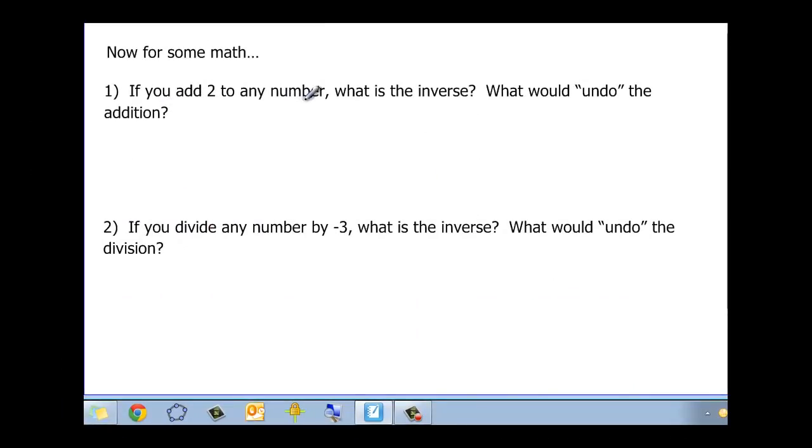Let's do some math. If you add any two numbers, what is the inverse? Well, you would subtract two. If you wanted to undo adding two, you would subtract two. If you divide any number by negative three, what is the inverse? The inverse would be to multiply, and you would multiply by negative three. You undo with the same thing. Notice when we go back and think about the coat on the hanger, I didn't put it on something else. I put it on the hanger just like I had taken it off the hanger. We keep the negative three, but we multiply instead of divide. So it's the operation that we need to be the opposite.